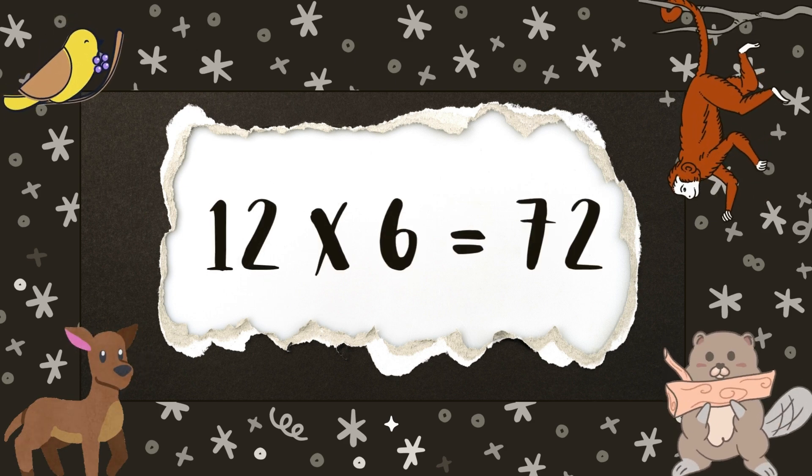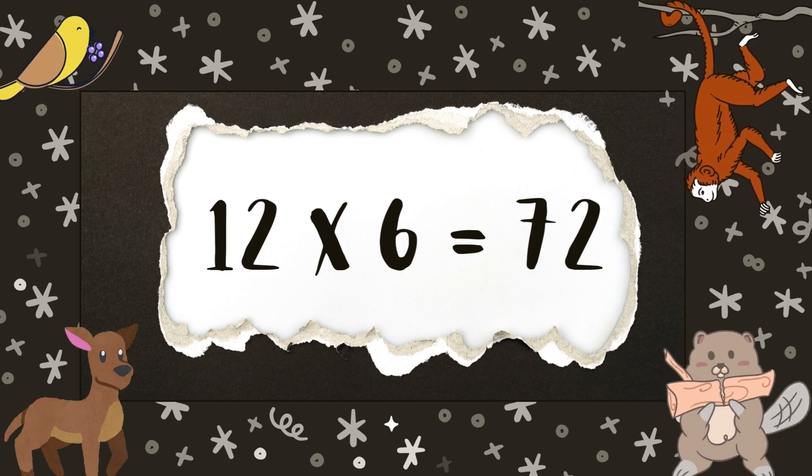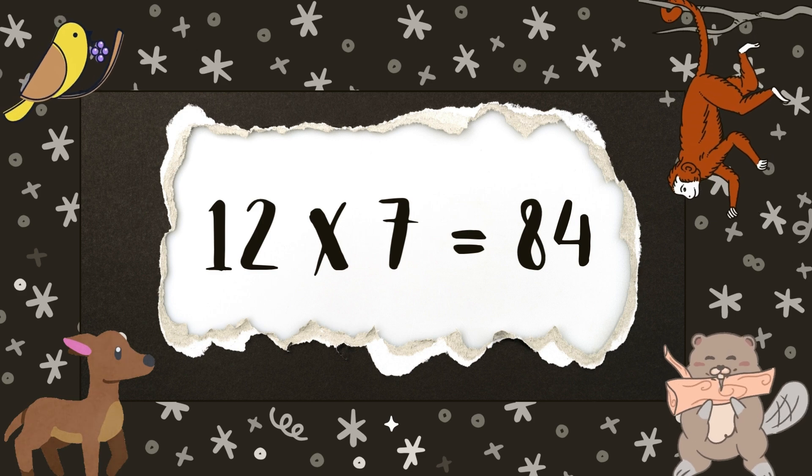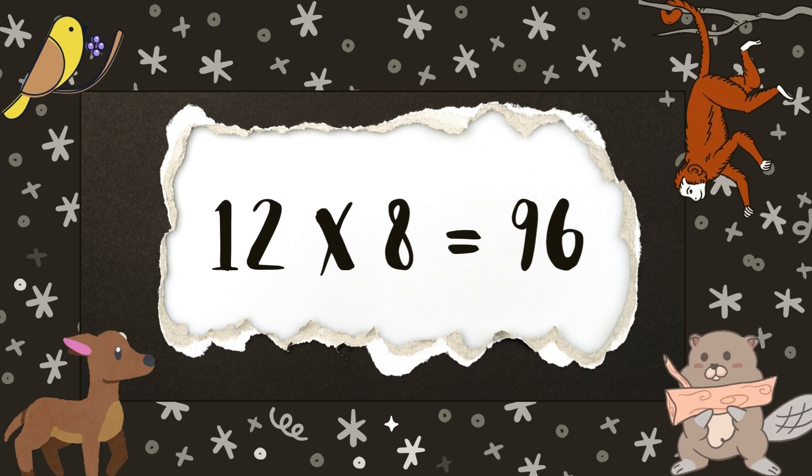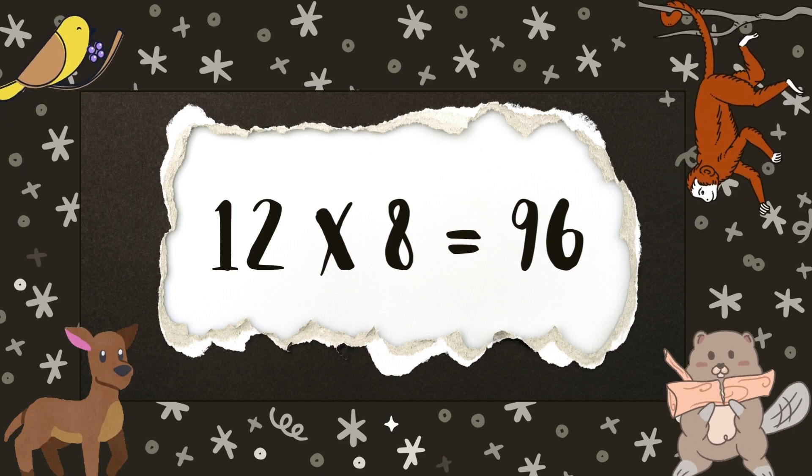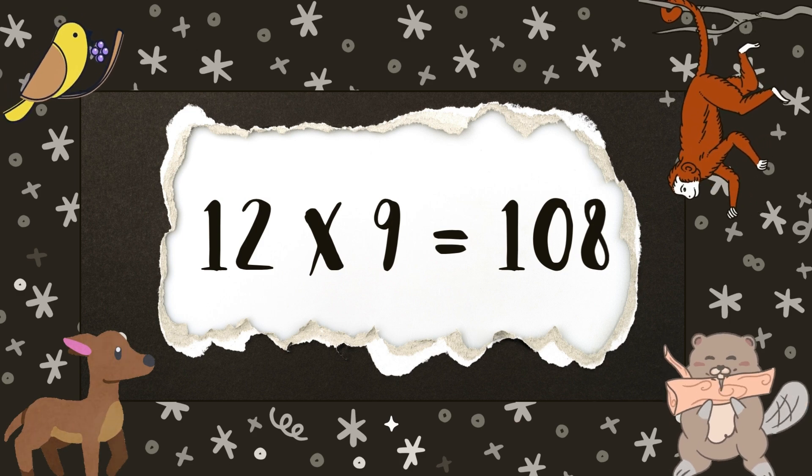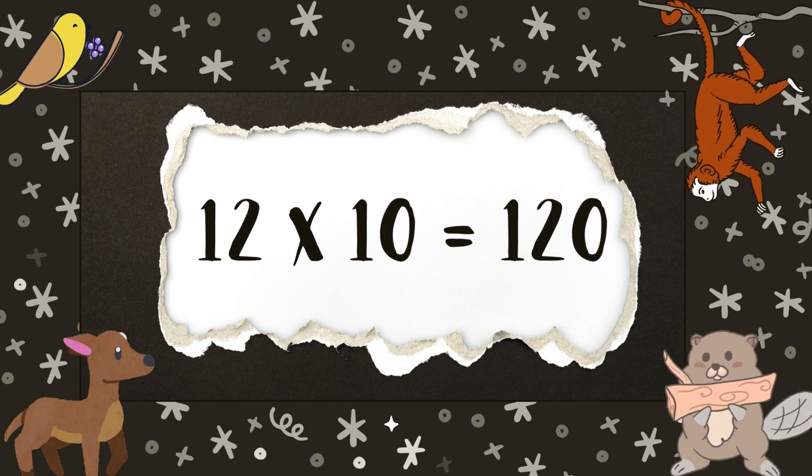12 6s are 72, 12 7s are 84, 12 8s are 96, 12 9s are 108, 12 10s are 120.